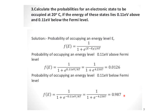So at room temperature of 20 degrees, there is a 98% chance that electrons occupy states in the valence band (below the Fermi level) and only about 1% of electrons are above the Fermi level in the conduction band. This confirms that almost all electrons remain in the valence band at room temperature.